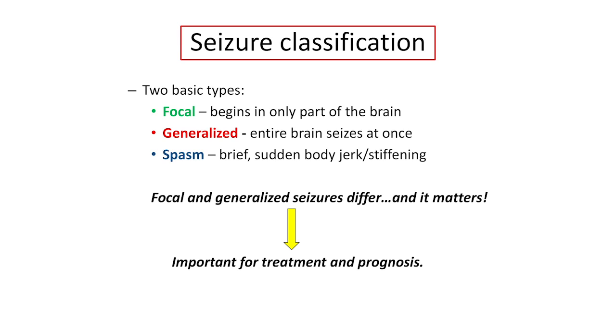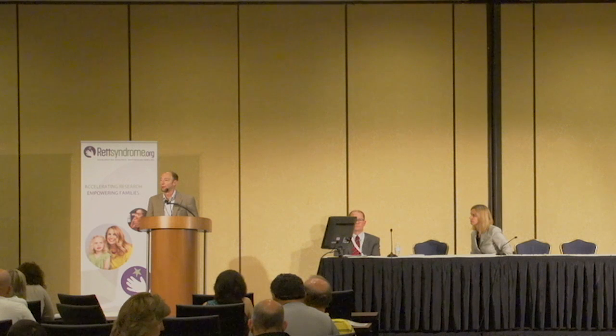Another term is spasm, such as an infantile spasm — usually a kind of generalized seizure where the abnormal stiffening or tonic movement is held for a couple of seconds. Many children with Rett syndrome have infantile spasms. Focal and generalized seizures are different in a lot of respects, and it matters because we will possibly treat them differently — choosing different medications or other options.